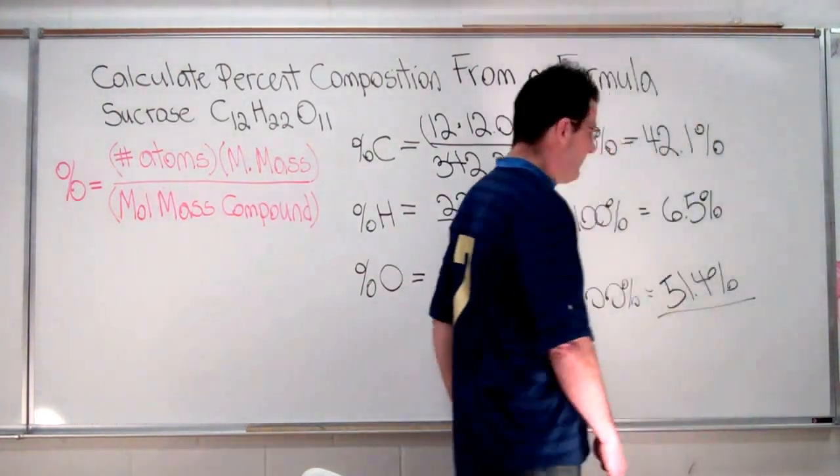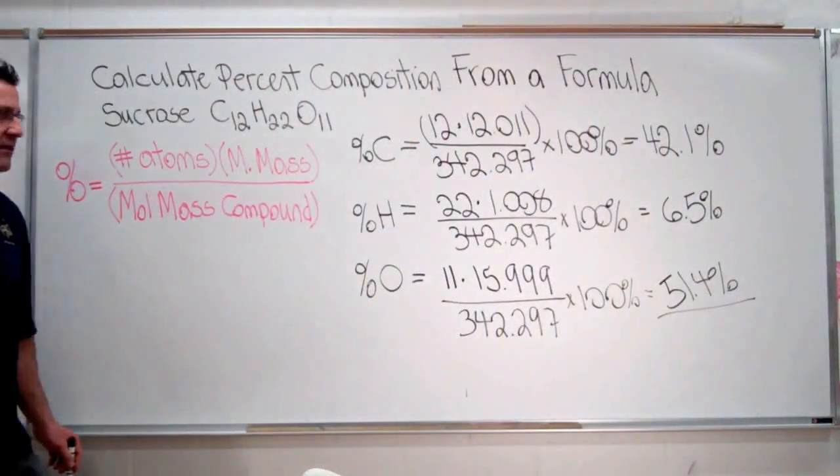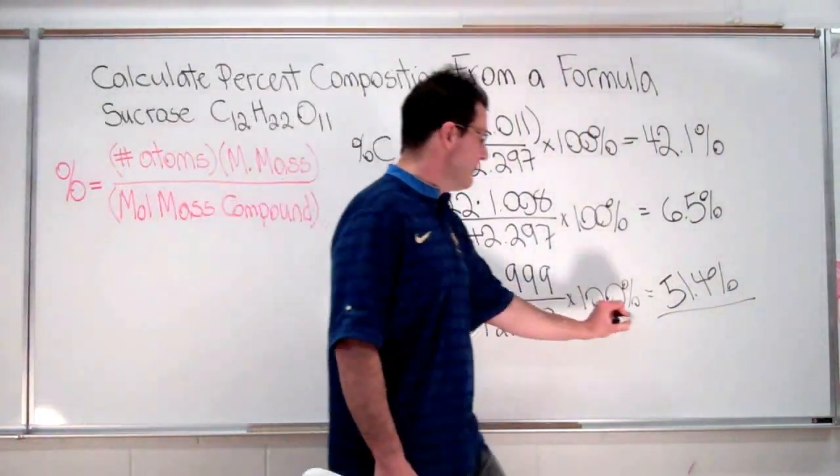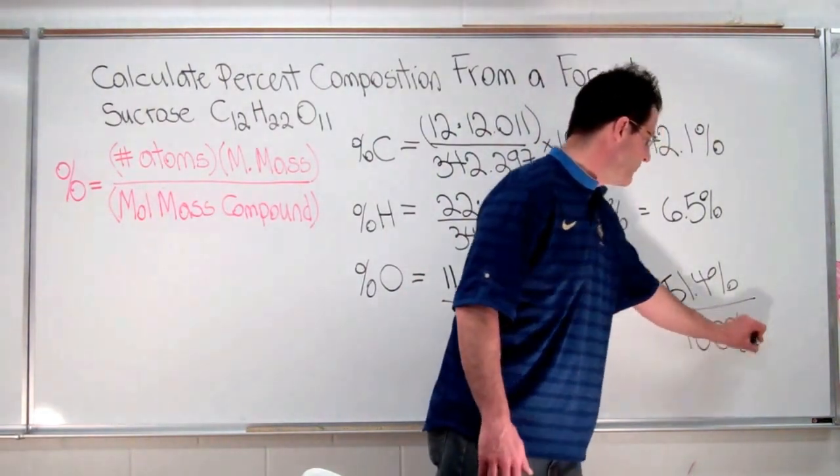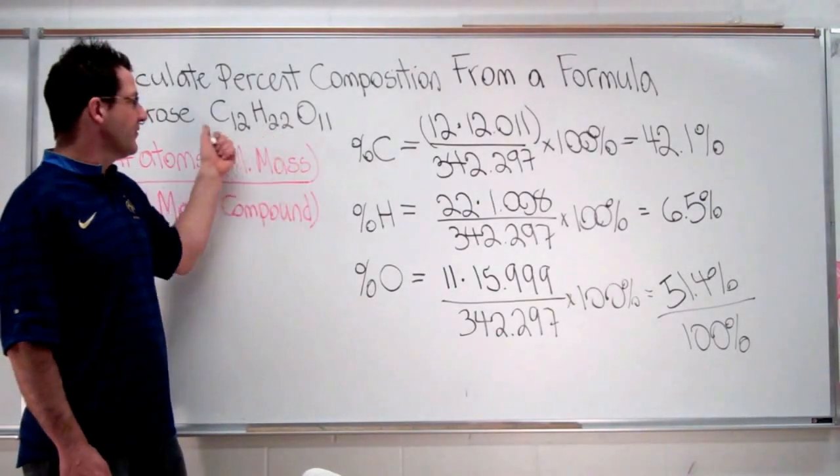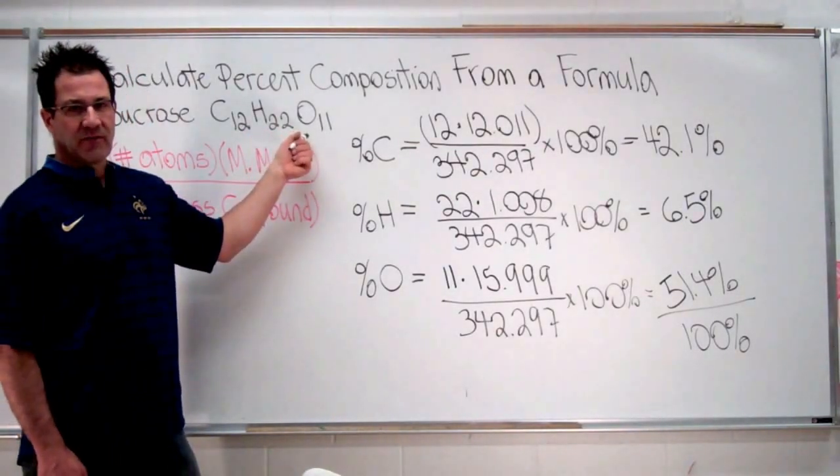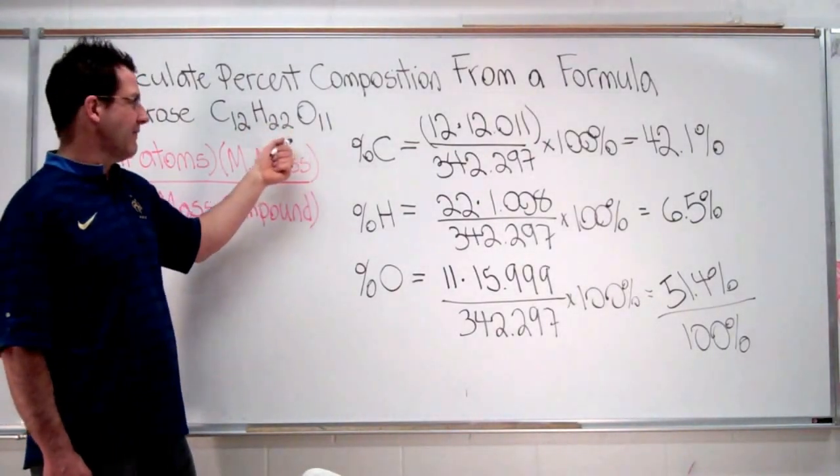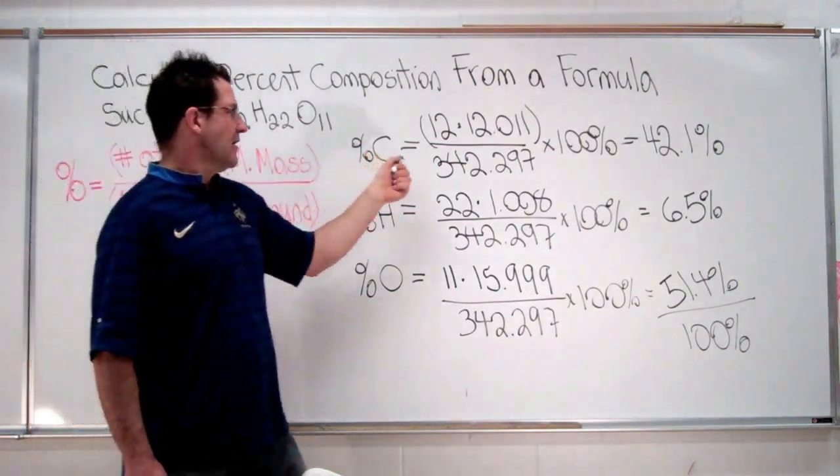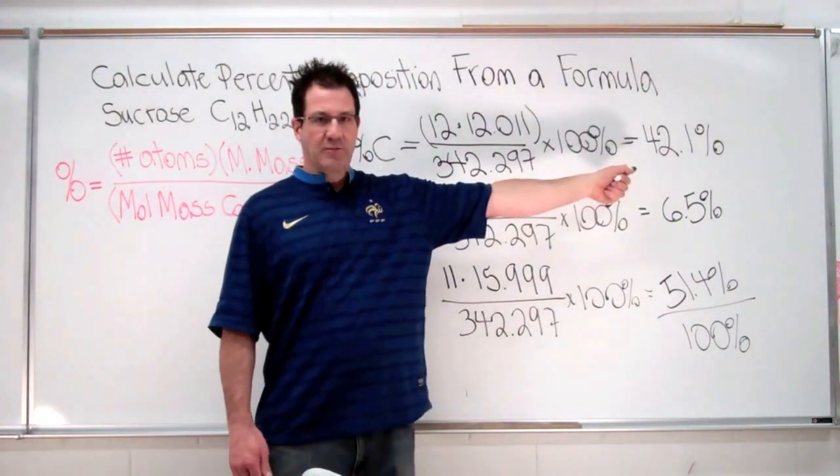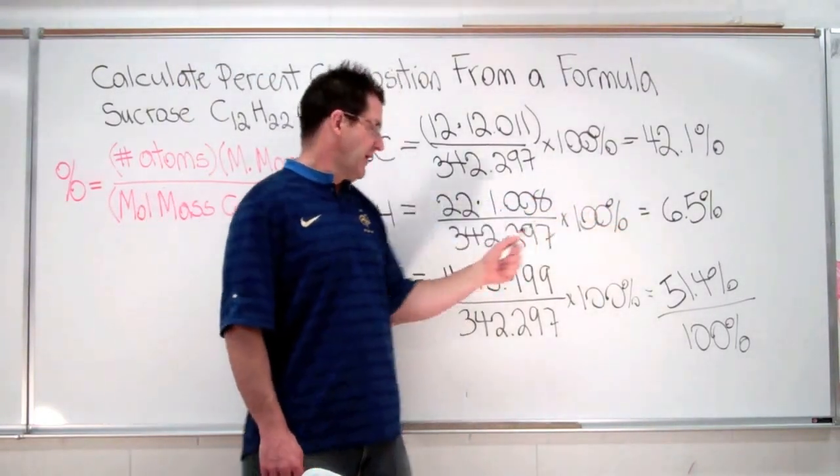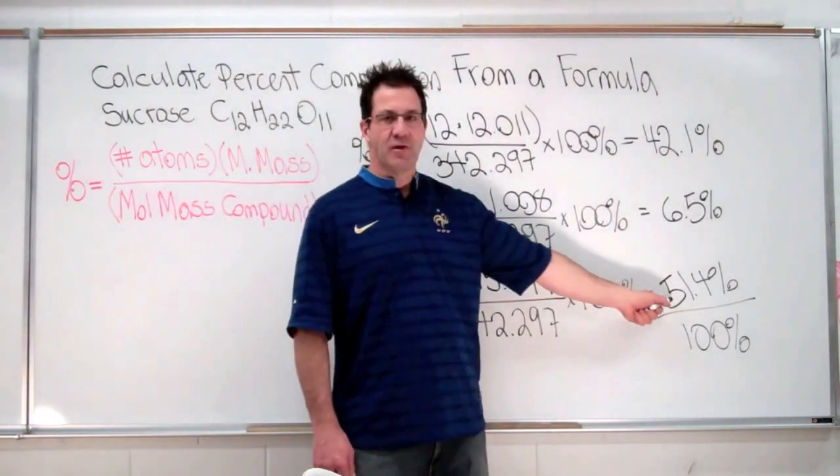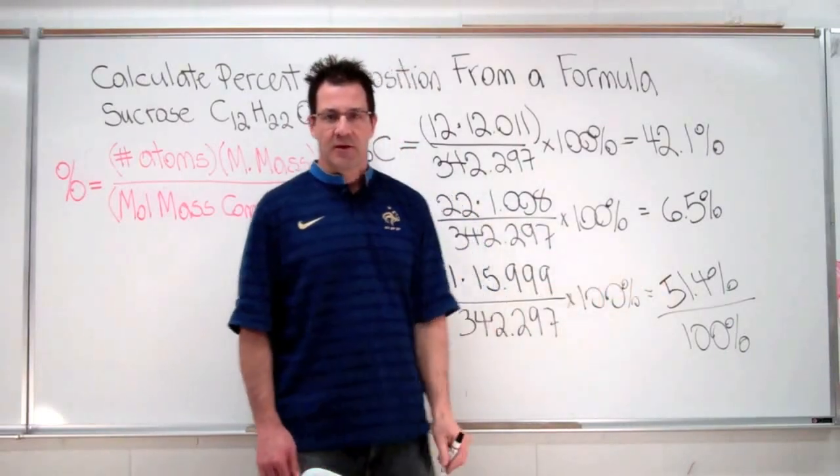And we can check that, of course. If we add up all of the percents, we should come up with 100%, and indeed we do. So in any amount of sucrose, it doesn't matter how many grams we have or how many moles we have, the percent of carbon is going to be 42.1%, the percent of hydrogen is going to be 6.5%, and the percent of oxygen is going to be 51.4%. Thank you very much.